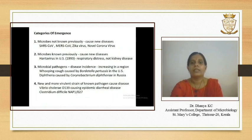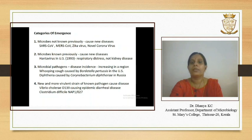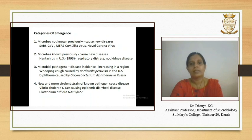There are 7 categories of disease emergence or re-emergence. Category 1 includes microorganisms that were not known previously and cause new diseases. Examples are SARS-CoV, MERS-CoV, Zika virus, novel coronavirus, etc.